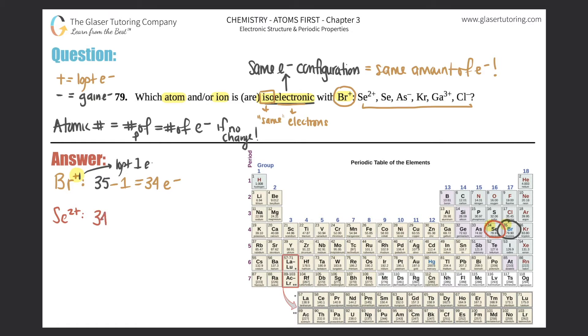That's 34, and now they're saying that selenium is a +2, which means that you lost two electrons. So 34 minus 2 is 32. This would not be isoelectronic with bromine +1 because 34 is not the same as 32, so we can get rid of this one.